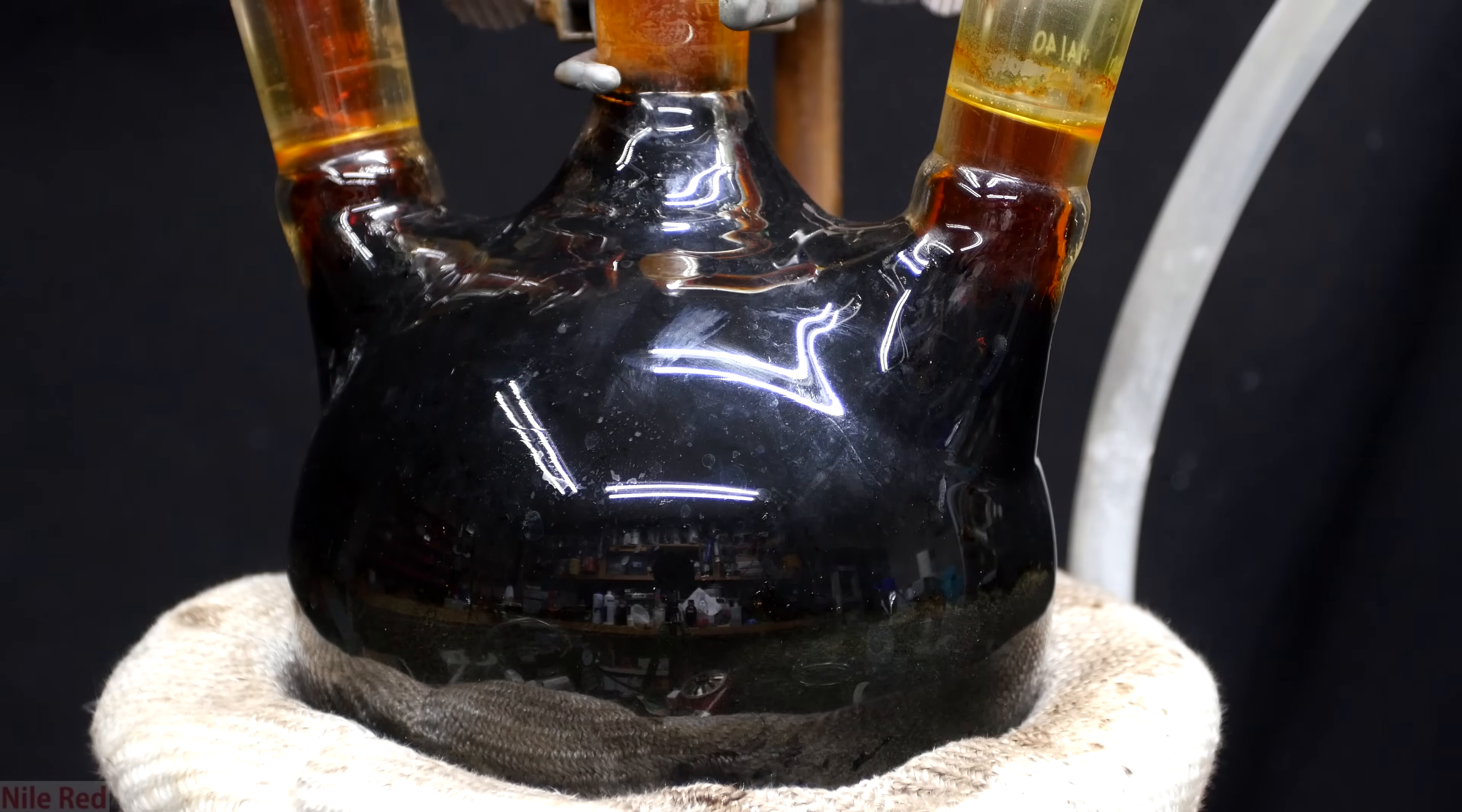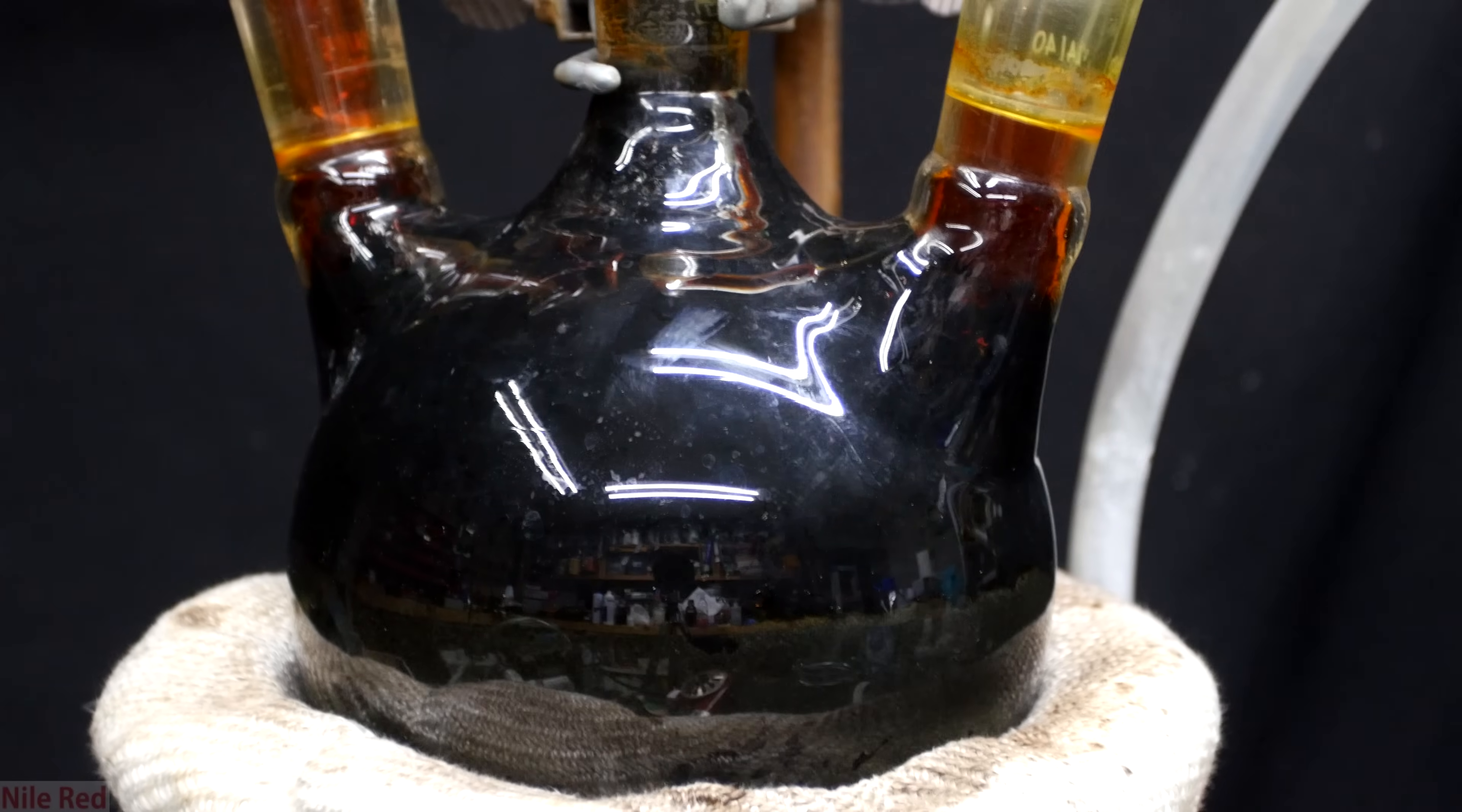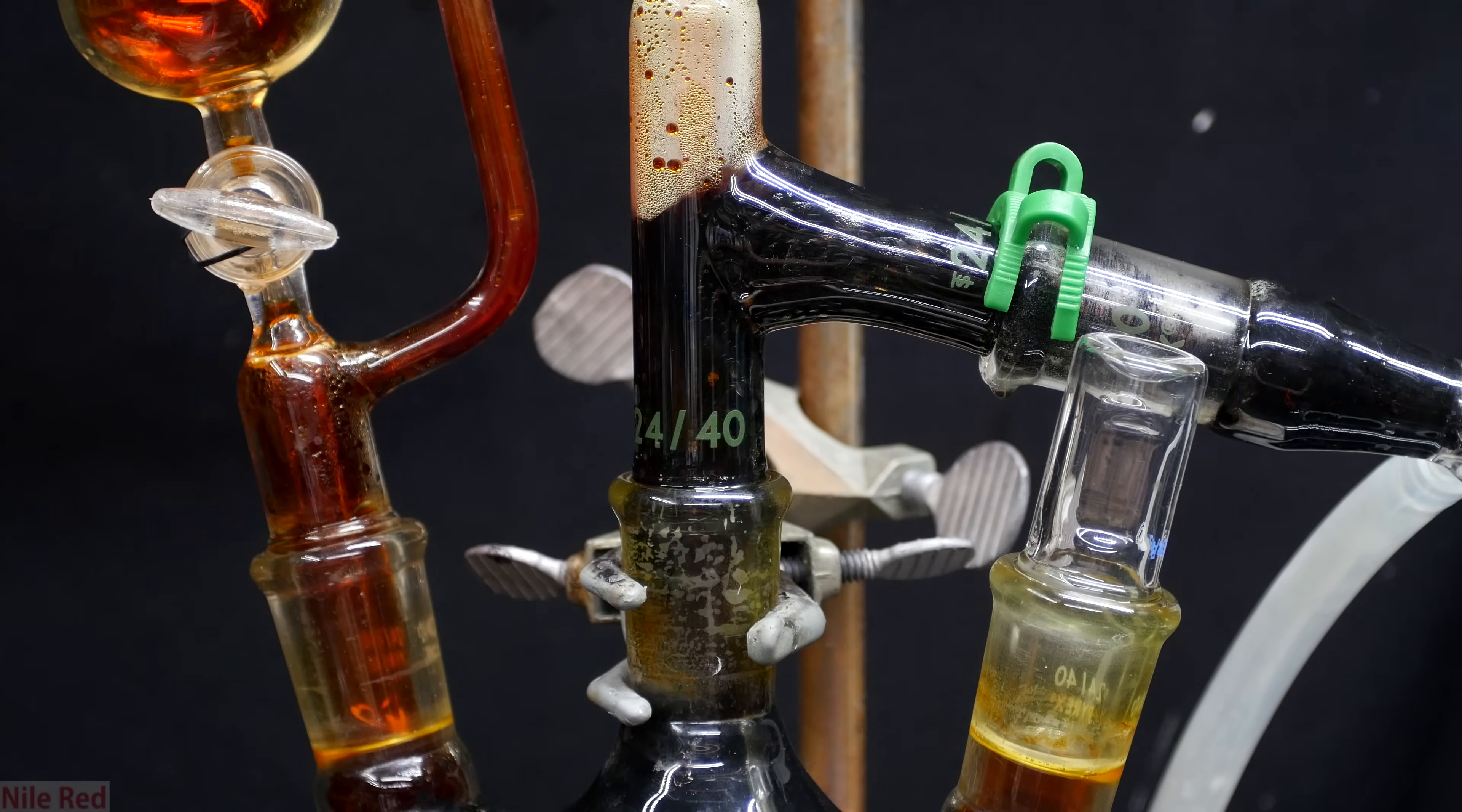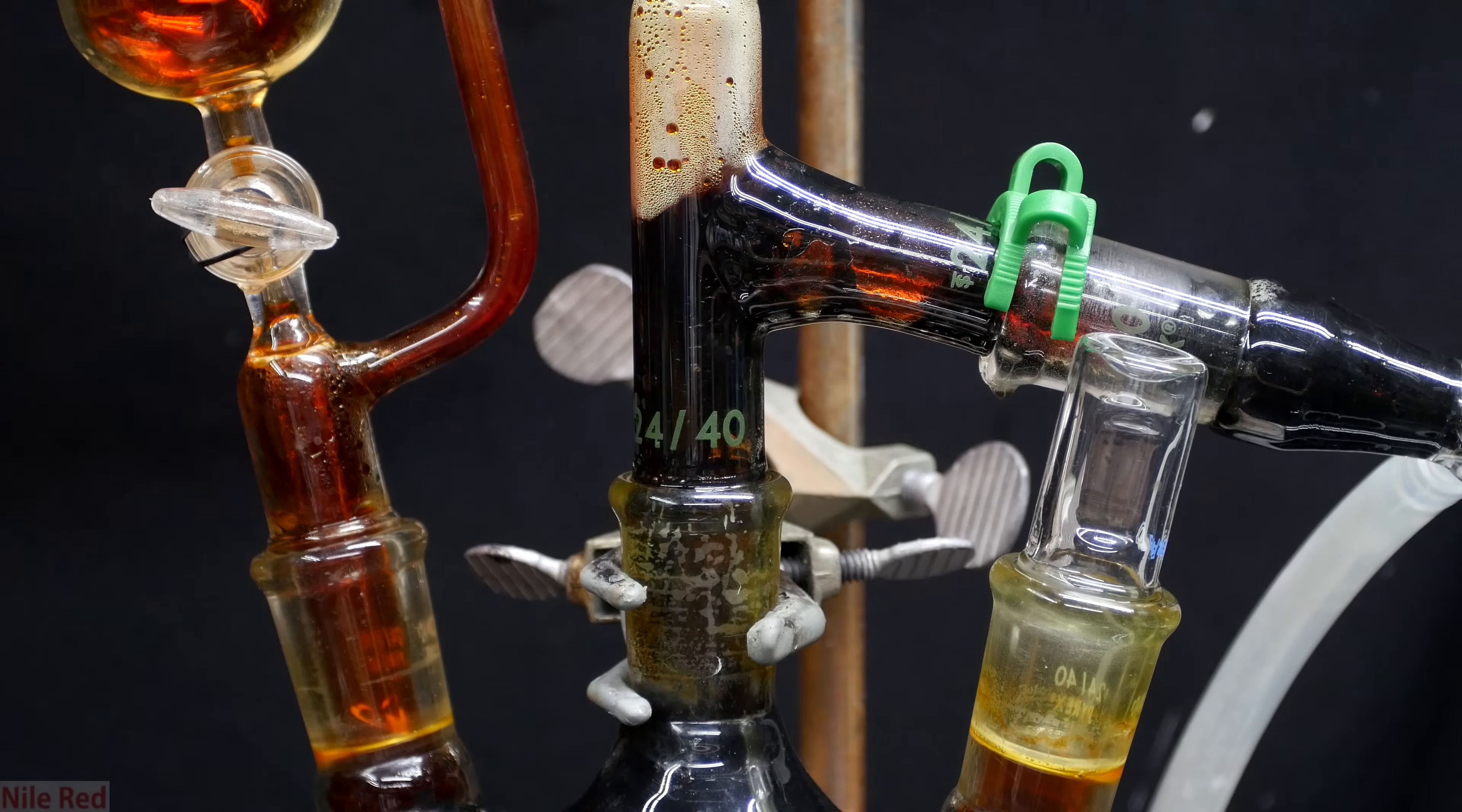The reaction is done when the contents of the flask start to froth. You can see here that the flask is now black and it's climbing up into the distillation apparatus. Because of this, some of the contents was able to froth over and make it into the receiving flask. This is really undesirable, but it's not the end of the world and it can be fixed with an extra cleaning step.